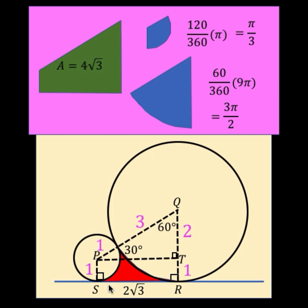So for the area now that's remaining, that's the area of this red shaded region, we just have to subtract from 4 square root of 3 the two sector areas: pi over 3 and 3 pi over 2. And then pi over 3 plus 3 pi over 2 gives us 11 pi over 6.